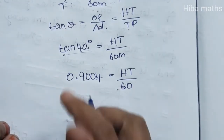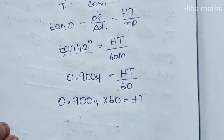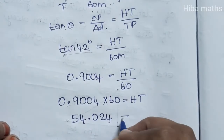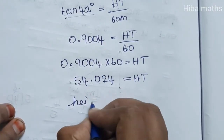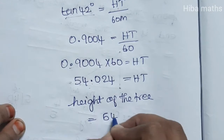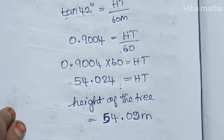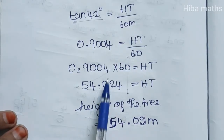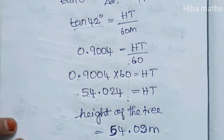Solving for the height of the tree: HT equals 0.9004 multiplied by 60, which gives us 54.02 meters. Therefore, the height of the tree is 54.02 meters.